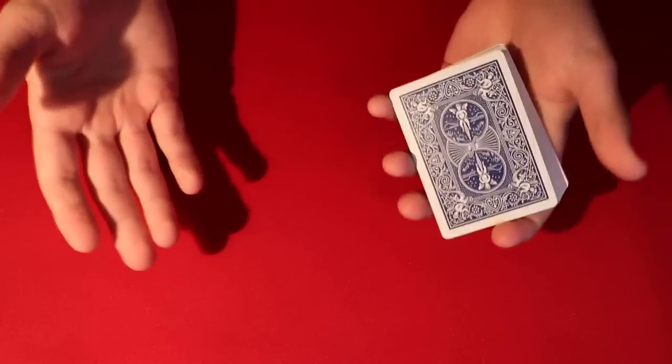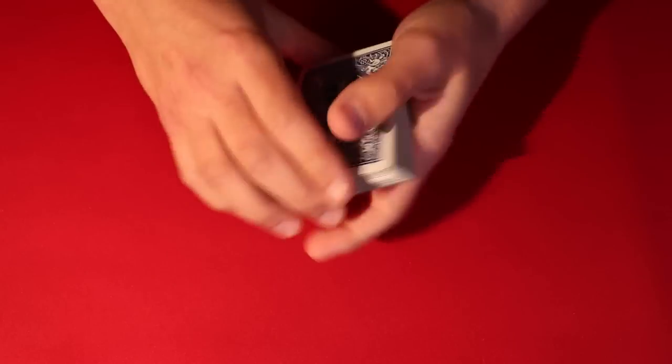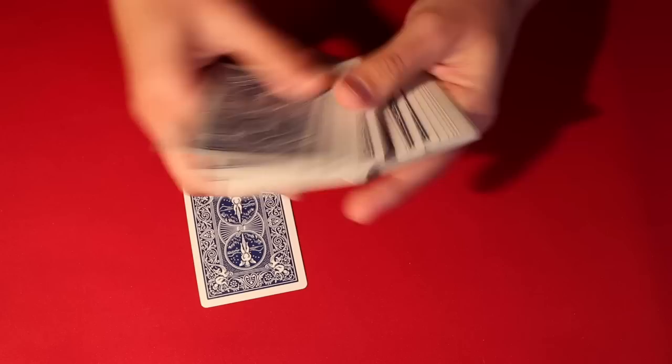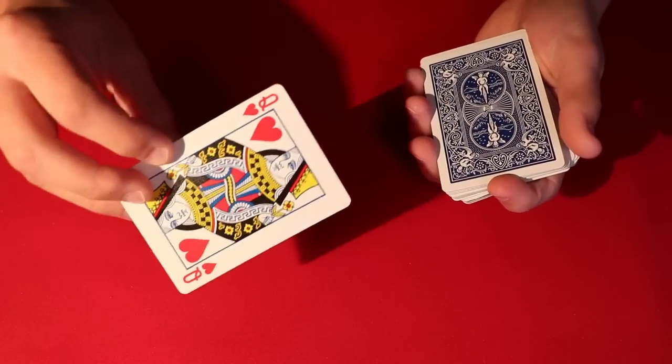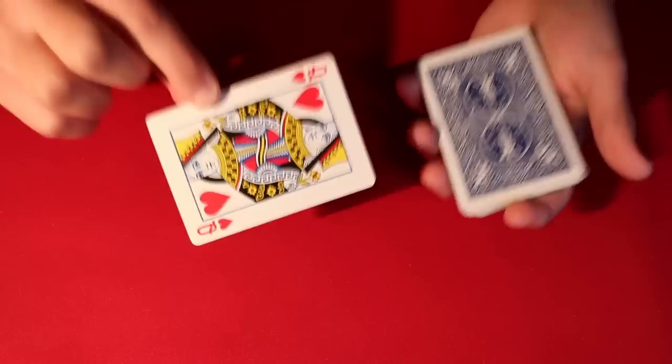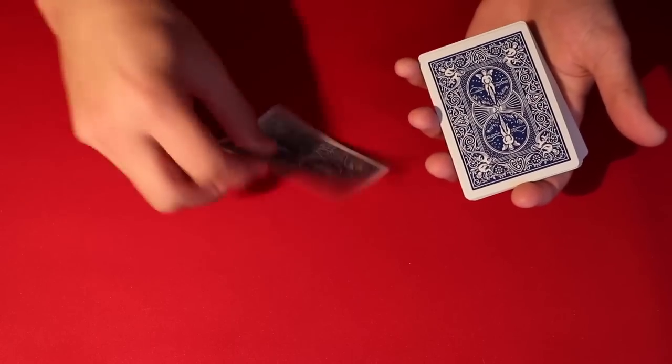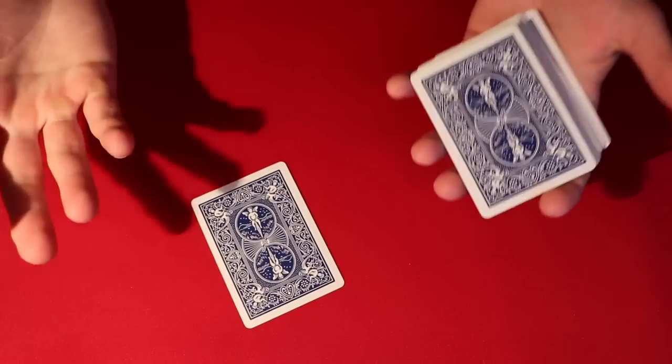So bottom line is you just go ahead and you have the spectator and it's better to have them shuffle it up so that way they feel like they have some control over it. So you go ahead, they shuffle the deck up and then what you'll do is have them pick a card from the middle. And then let's say in this case it's the queen of hearts.